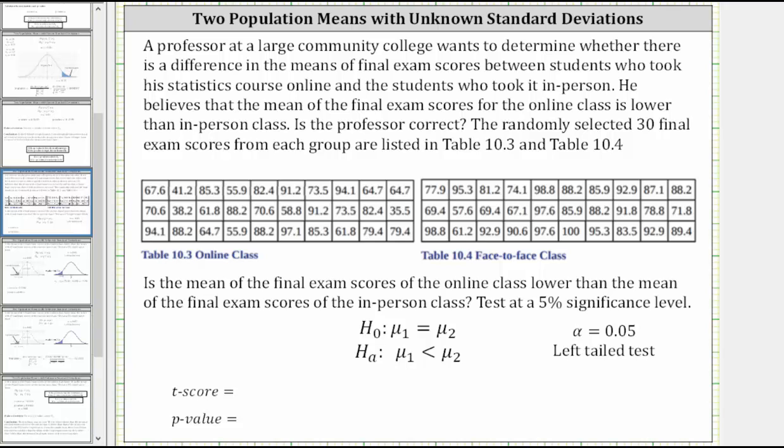Welcome to an example of a hypothesis test of two population means with unknown population standard deviations given data. A professor at a large community college wants to determine whether there is a difference in the means of final exam scores between students who took his stats course online and the students who took it in person.